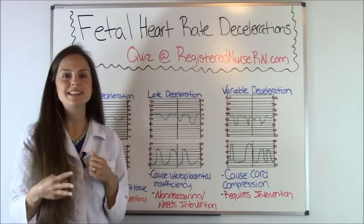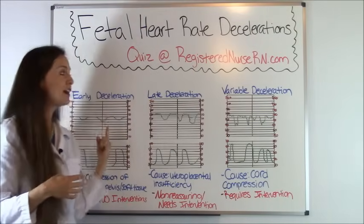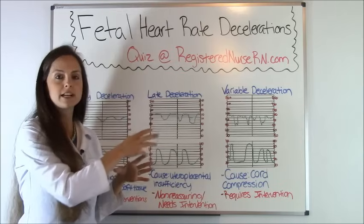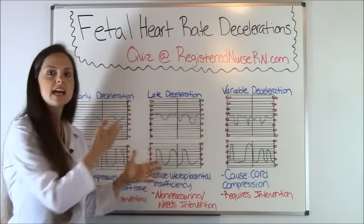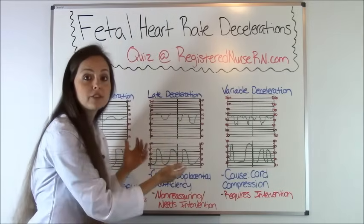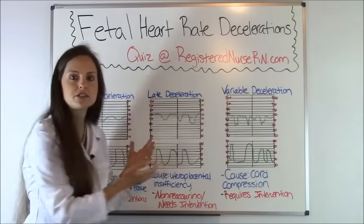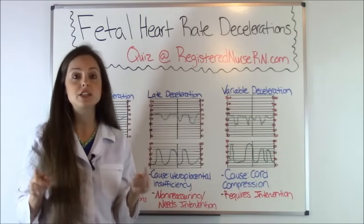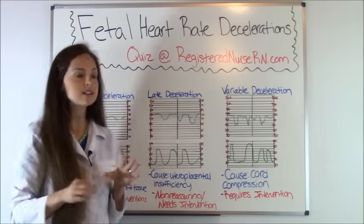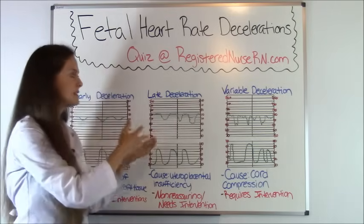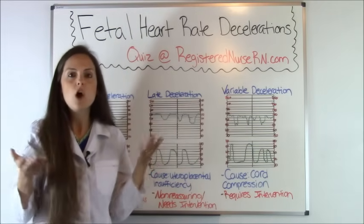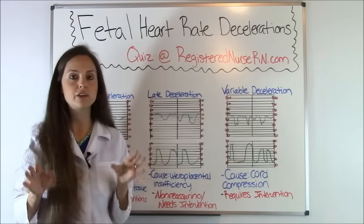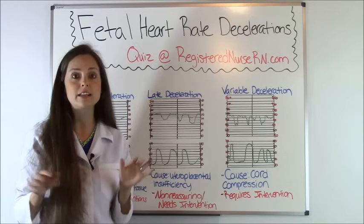There are three different types of decelerations: early, late, and variable. First I'm going to go over how they look to give you an understanding, and then I'll go over them individually and hit the highlights for your exam. But first let's go over these grid lines and squiggly lines and explain what they mean, because it may look foreign — I know when I first saw it, it looked foreign to me.